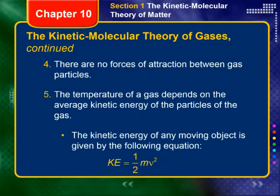Moving on to assumptions four and five. There are no forces of attraction between gas particles. As gas particles move throughout a container, there are no forces of attraction whatsoever. Two gas particles can pass very closely to one another but they will not influence each other's paths — they continue on the straight line they were already on. It does not matter how close they come; there is no polarity, no attractive force, and no repulsive force. They just keep going.